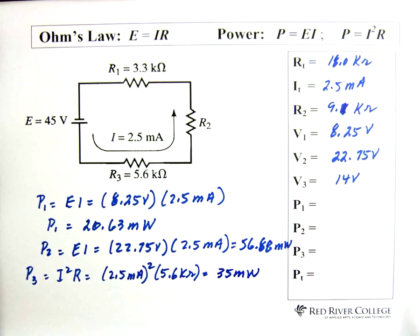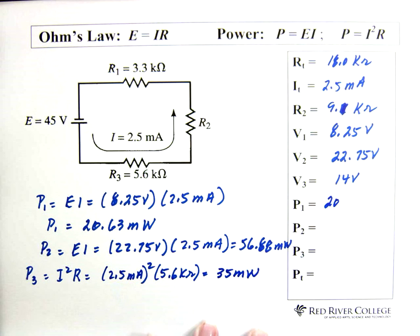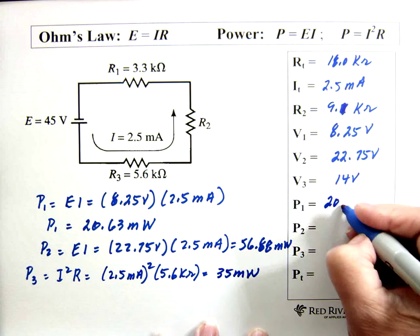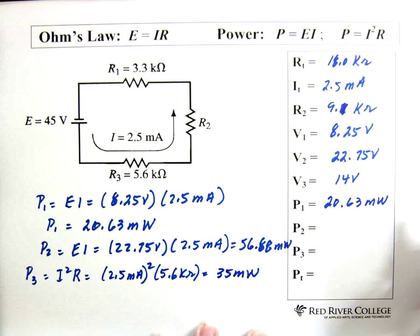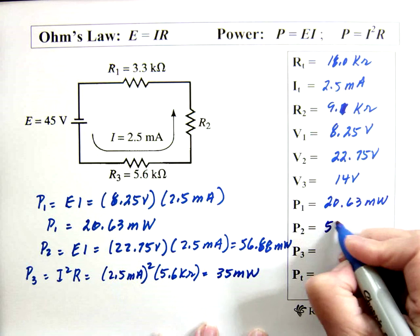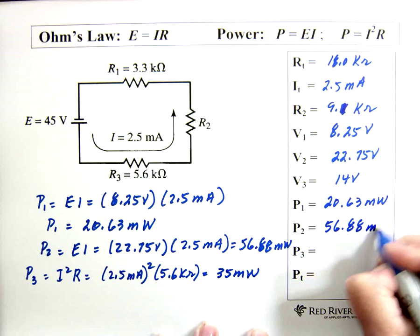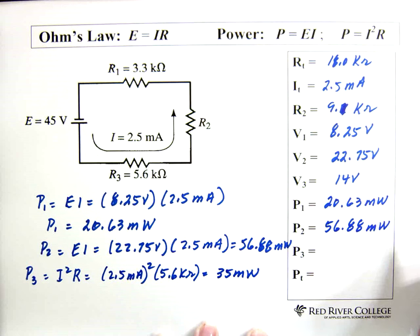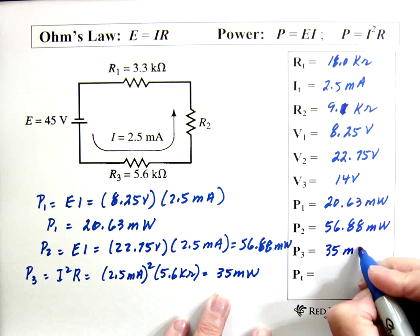So power 1, 20, is that right? 35? Yeah, it is right. 20.63 milliwatts. Power 2 is 56.88 milliwatts. And power 3 is 35 milliwatts.